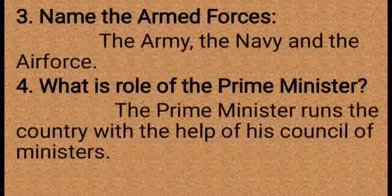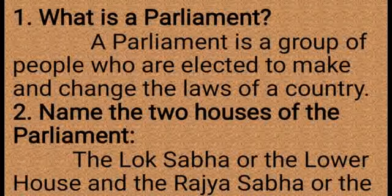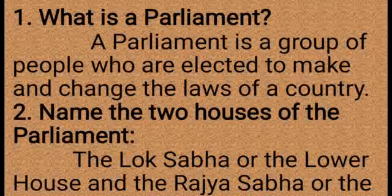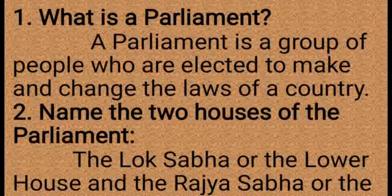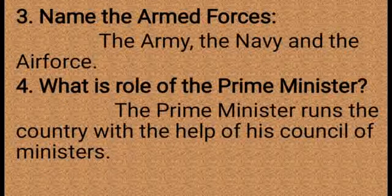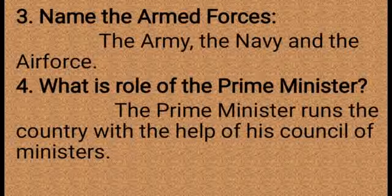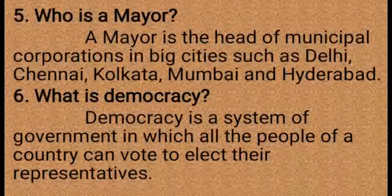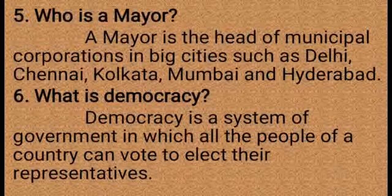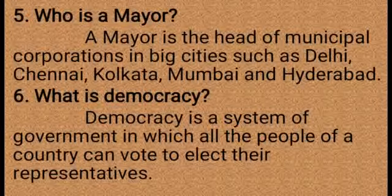Have you understood all the question answers? Let me repeat. What is a parliament? A parliament is a group of people who are elected to make and change the laws of a country. The two houses of the parliament are the Lok Sabha and the Rajya Sabha — Lok Sabha is the lower house and Rajya Sabha is the upper house. The armed forces are the army, the navy, and the air force. The prime minister runs the country with the help of his council of ministers. A mayor is the head of municipal corporations in big cities such as Delhi, Chennai, Kolkata, Mumbai, and Hyderabad. Democracy is a system of government in which all the people of a country can vote to elect their representatives.